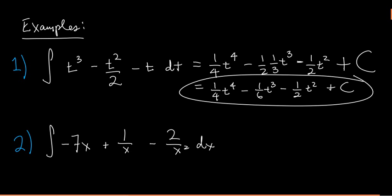Let's do another example: the integral of negative 7x plus 1 over x minus 2 over x squared. The reason we can handle each part separately is that we're adding and subtracting functions. In a later video you'll see what happens when we multiply two functions and integrate them, but for now we're adding and subtracting, so we just integrate each piece separately.